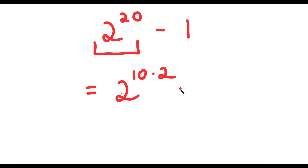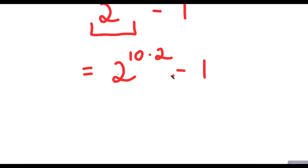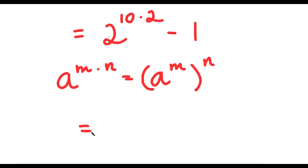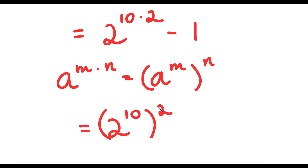So now I have 2 to the power of 10 times 2, minus 1. Using the property that a to the power of m times n equals a to the power of m, to the power of n, 2 to the power of 10 times 2 becomes 2 to the power of 10, to the power of 2, and I have this minus 1.